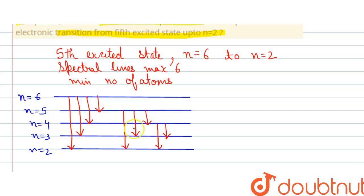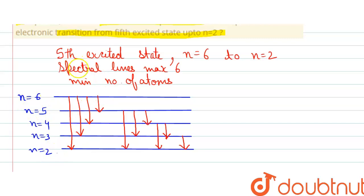If the electron is present in n equals to three, then it can move to n equals to two. So these are the spectral lines that are possible for the transition between n equals to six and n equals to two. We are given that the spectral lines should be a maximum of six and we have to find the minimum number of atoms.